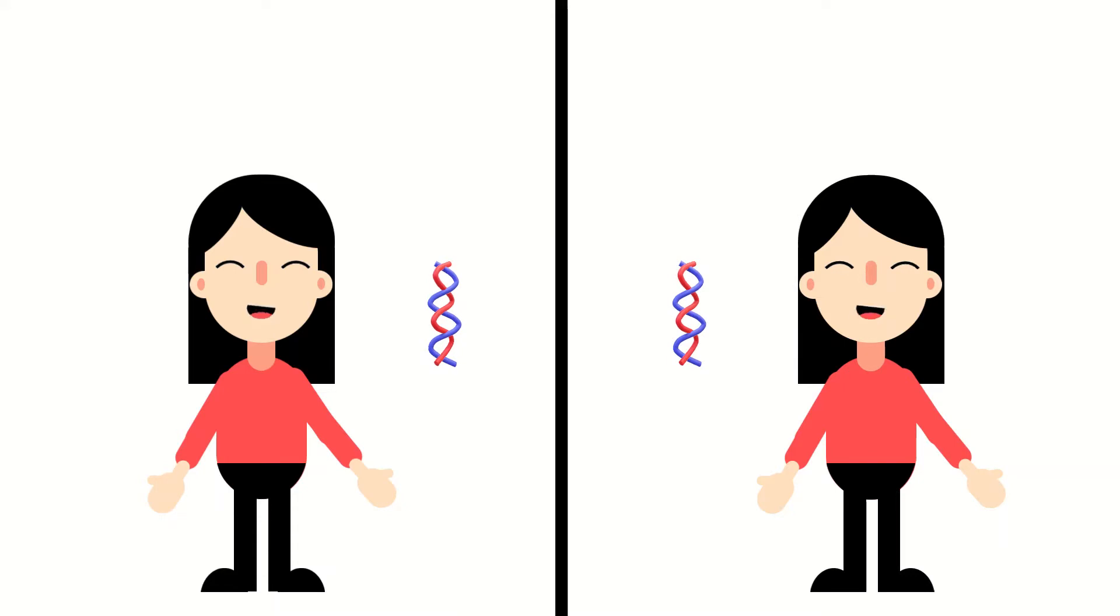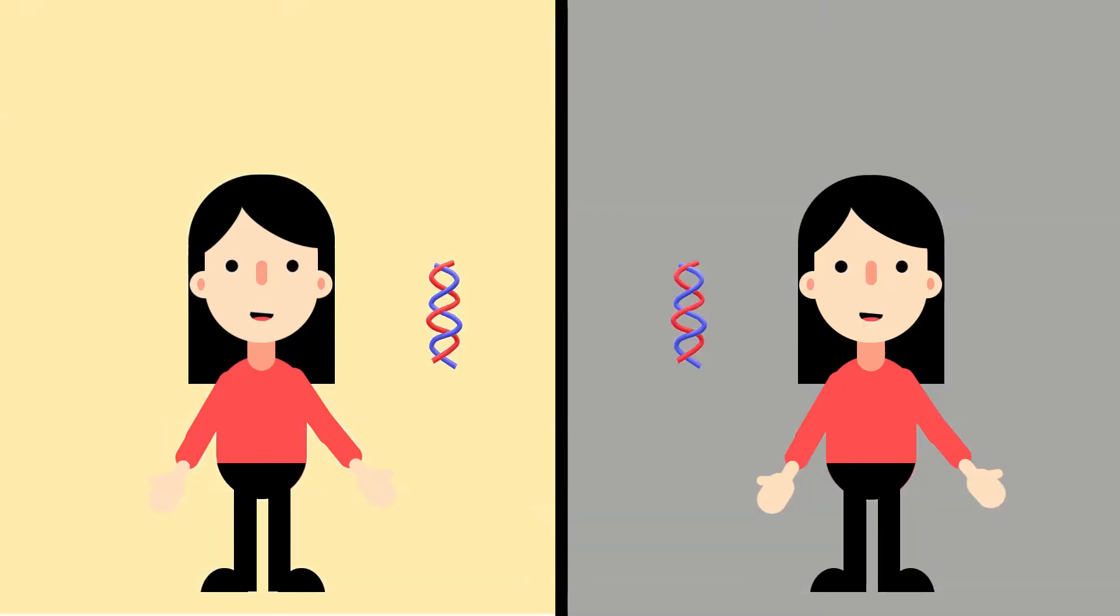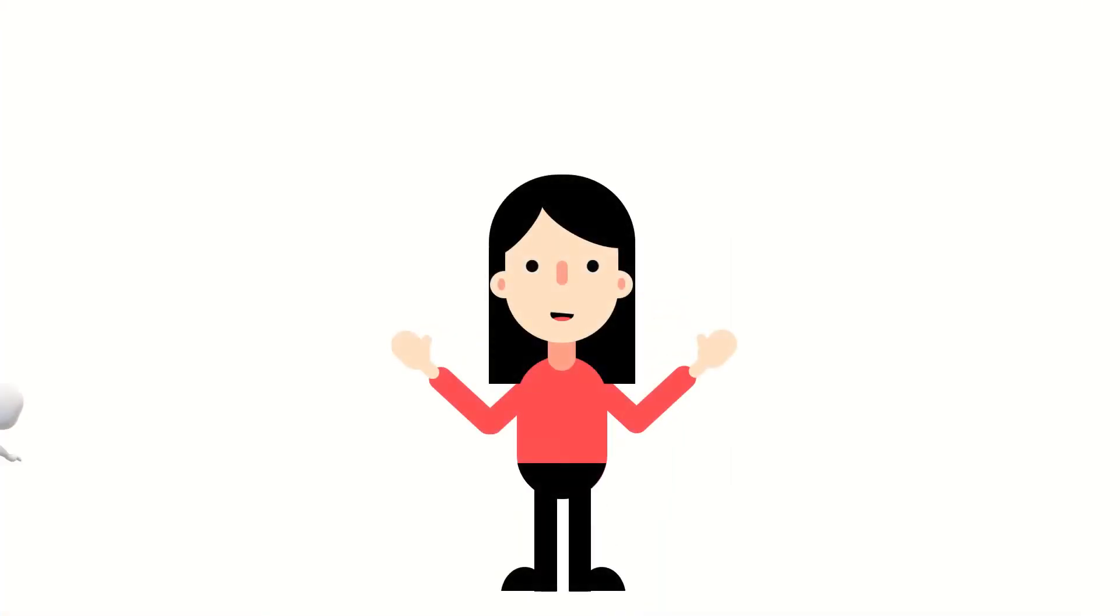Despite our identical DNA, us twins will grow up to be very different, height-wise, health-wise, and so forth, with our different life experiences. A major reason for this is epigenetics, modifying gene expression without changing the DNA sequence.